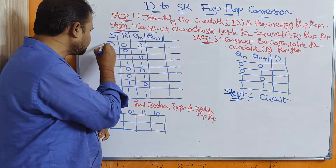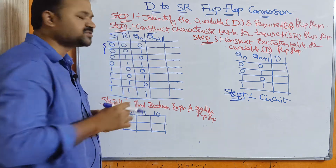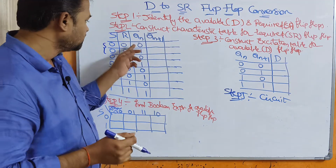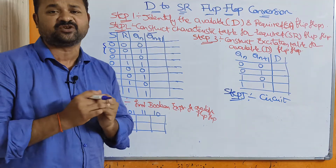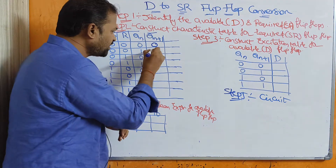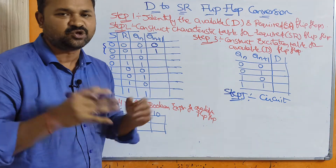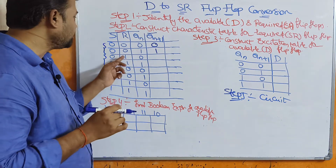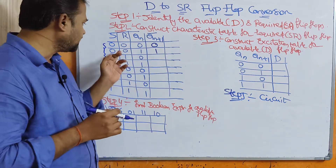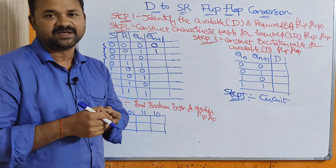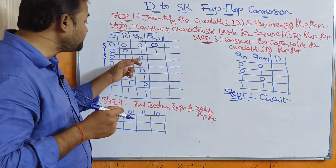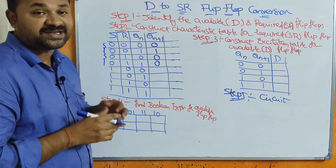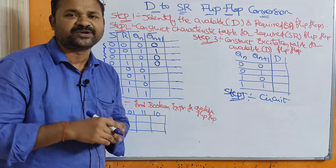In the first two combinations, S and R values are 0. In SR flip-flop, 00 means the output is no change — the current state output becomes the next state output. So 0 remains 0 and 1 remains 1. In the next two combinations, SR values are 01. Here R value is 1. R stands for reset, which means output is 0, irrespective of the current state.